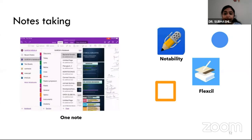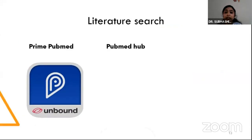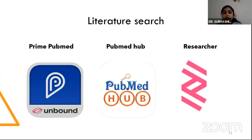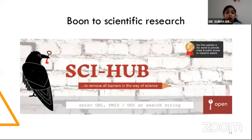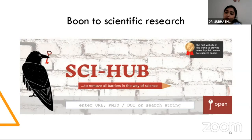The other two notes apps mentioned are paid and available only for iOS users. For literature search, these apps provide a personalized database for searched articles and are available free on both platforms. Sci-Hub is a remarkable website that gives easy access to paid articles, especially helpful for individual researchers who don't have institutional login access.